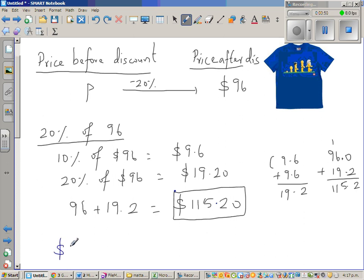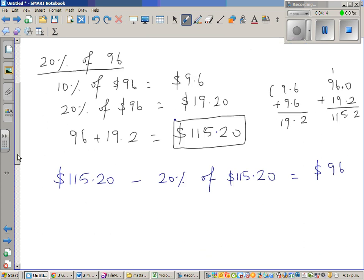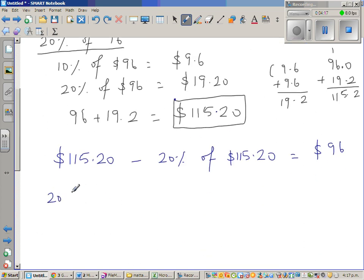So what I am saying is, if $115.20 is right, so $115.20 minus 20% of $115.20 should give me 96 if my answer is right. So let's do that.